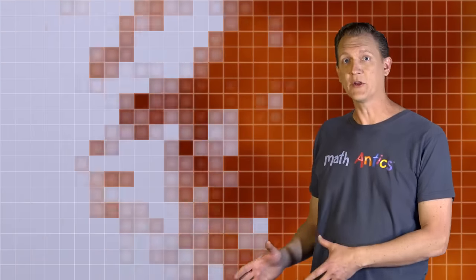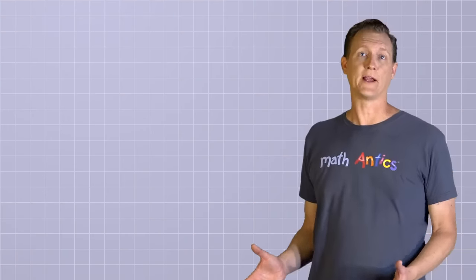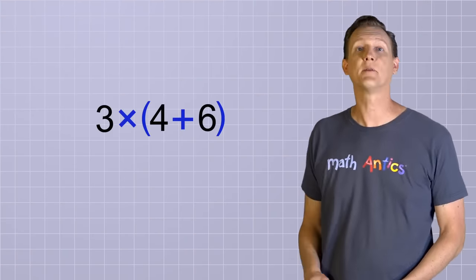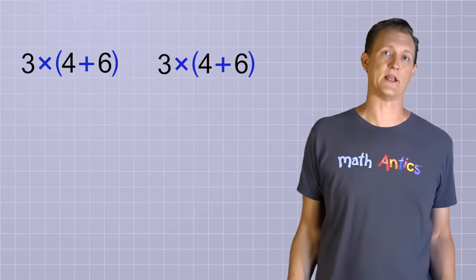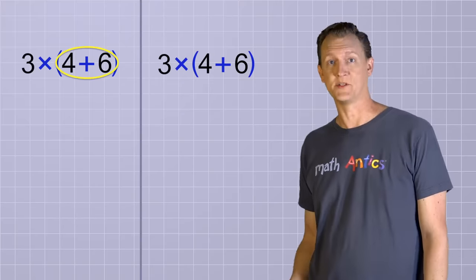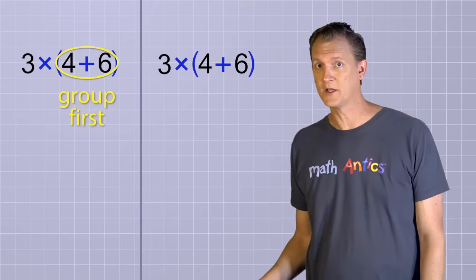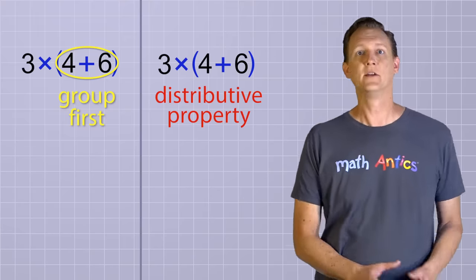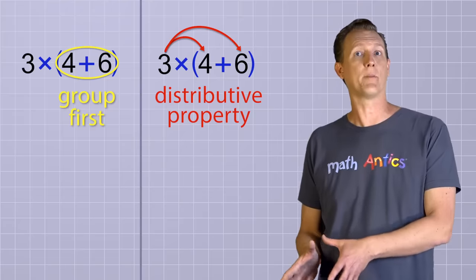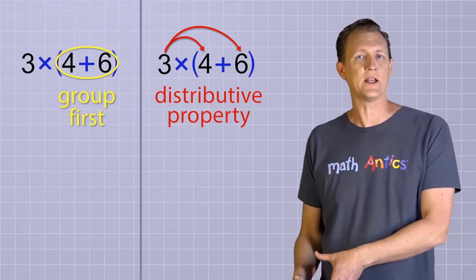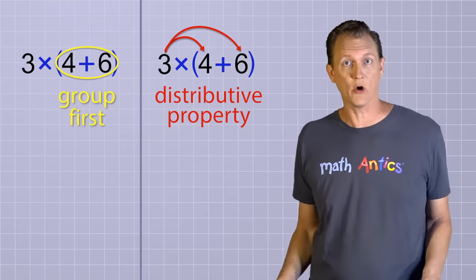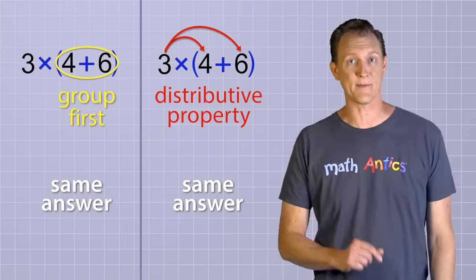And in that previous video, we saw how you can take a problem like 3 times the group and simplify it two different ways. You could either simplify what was in the group first, or you could use the distributive property to distribute a copy of the factor 3 to each member of the group. And no matter which way you go, you get the same answer.